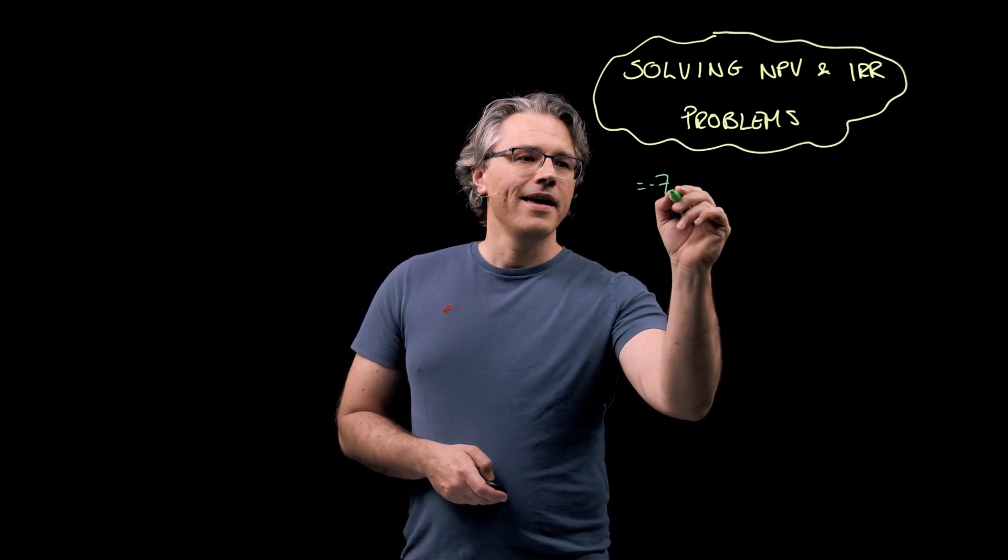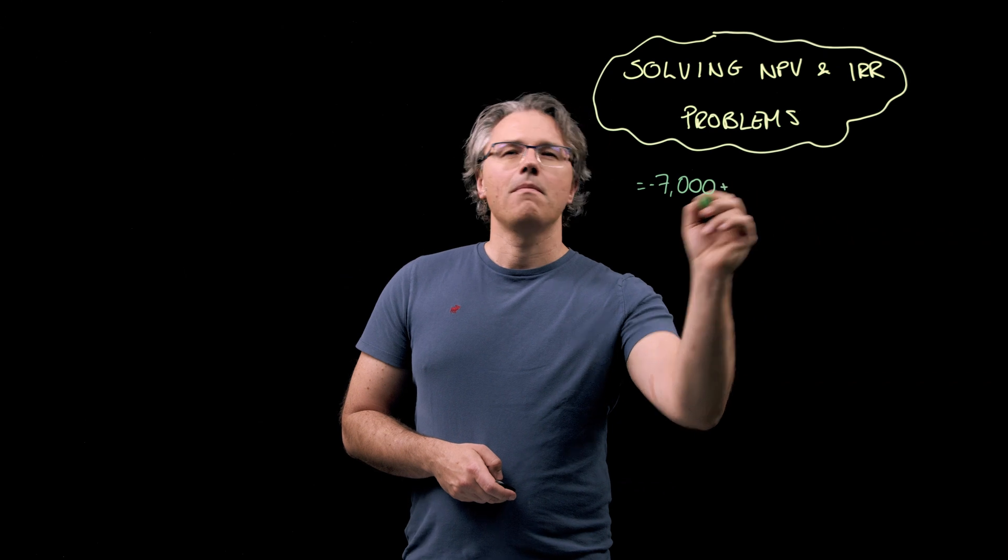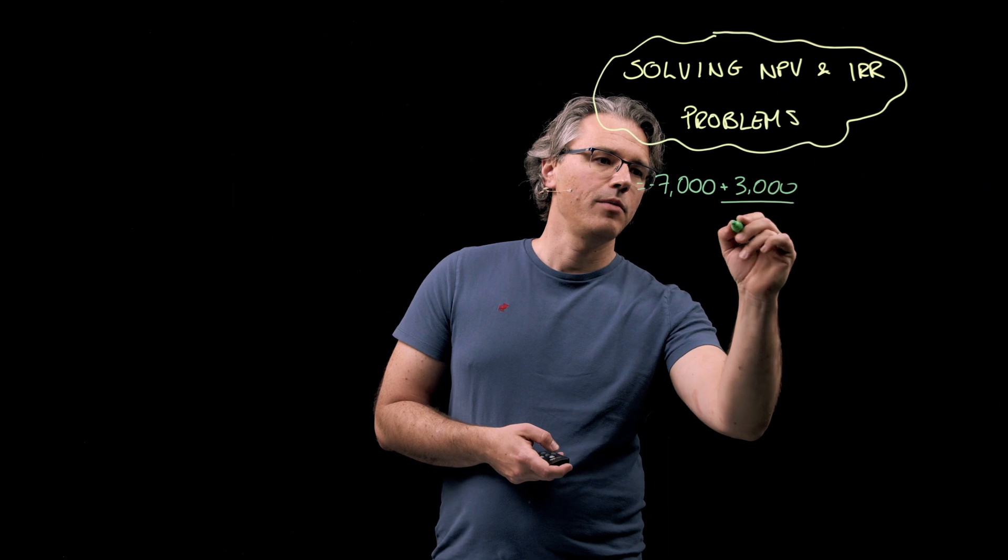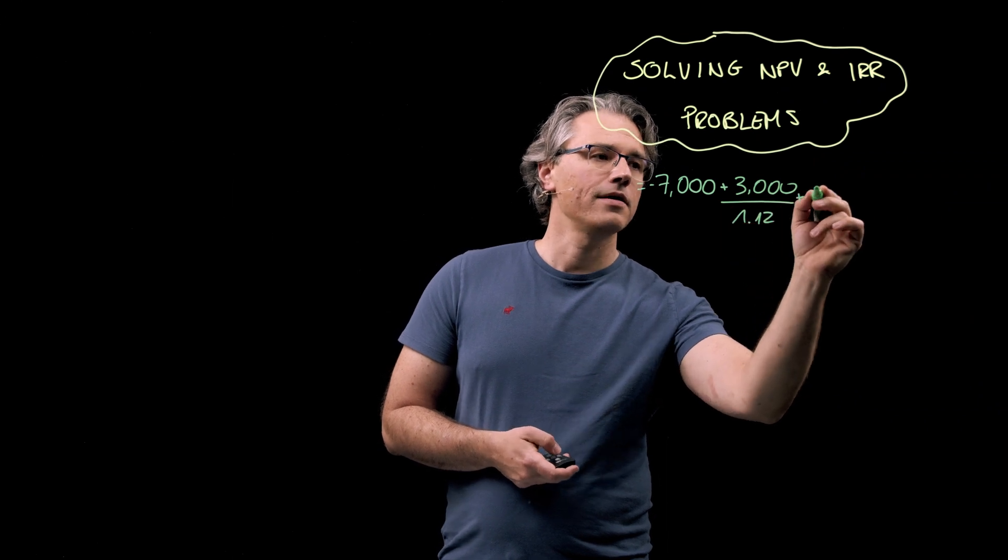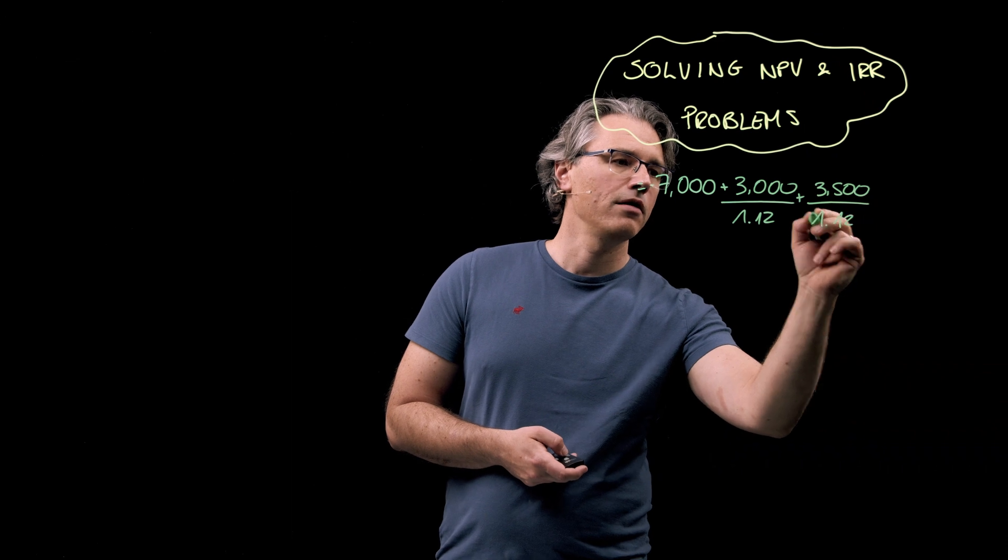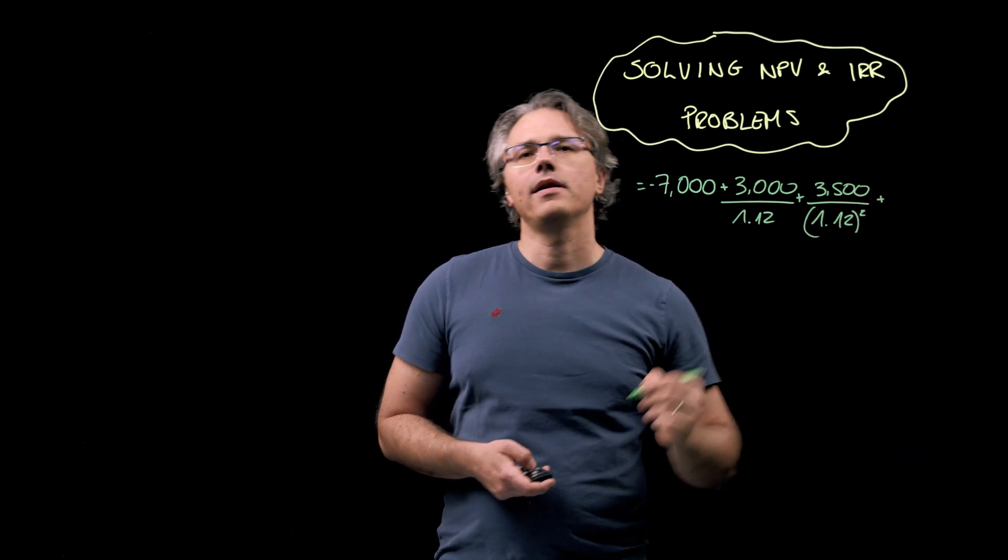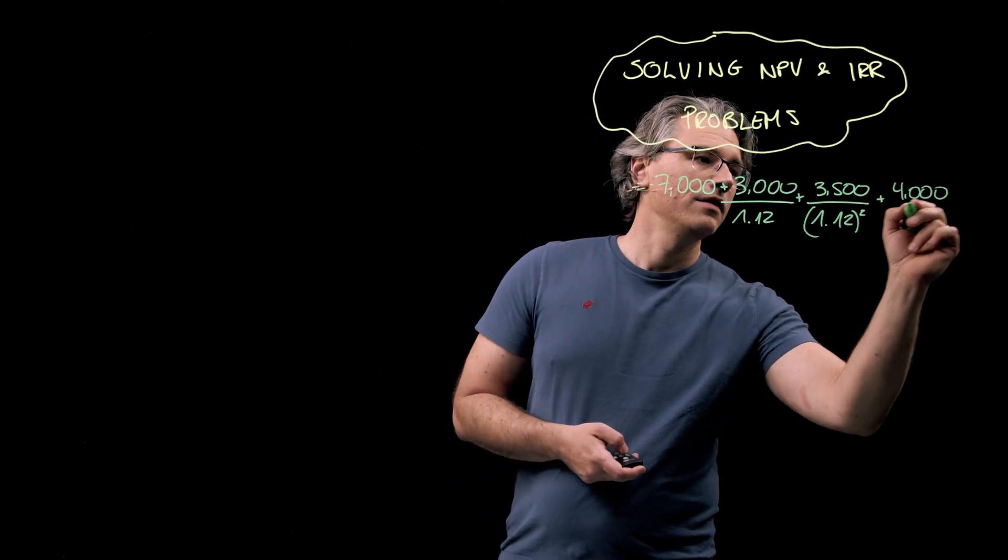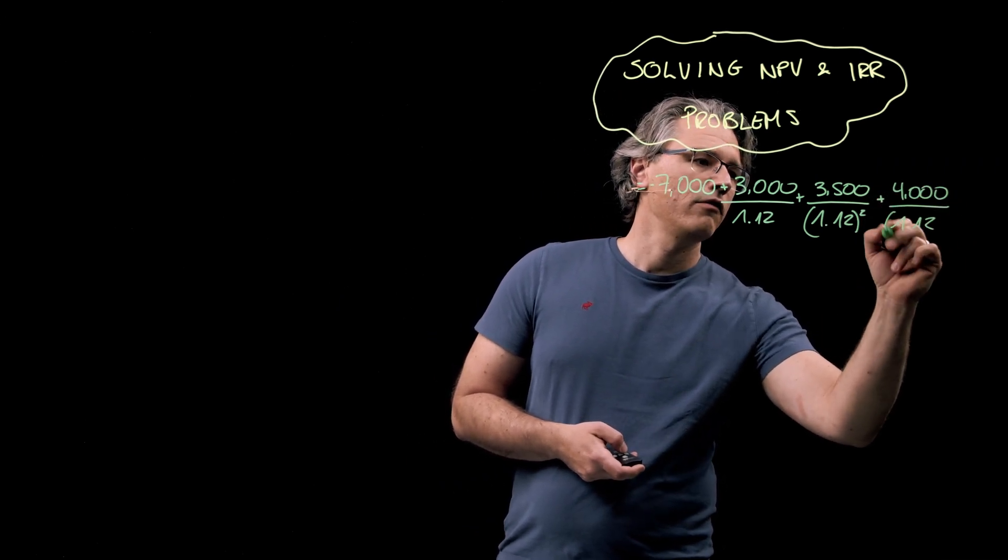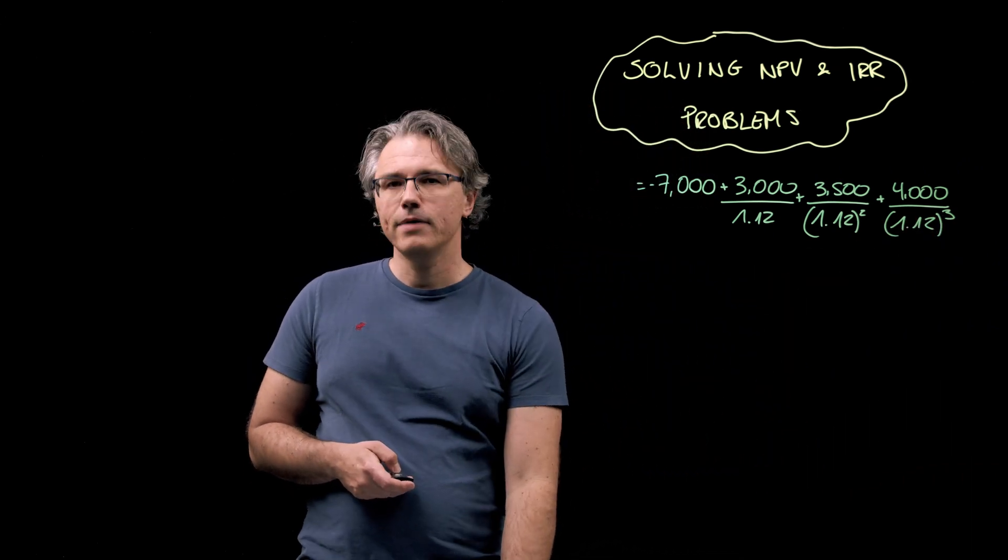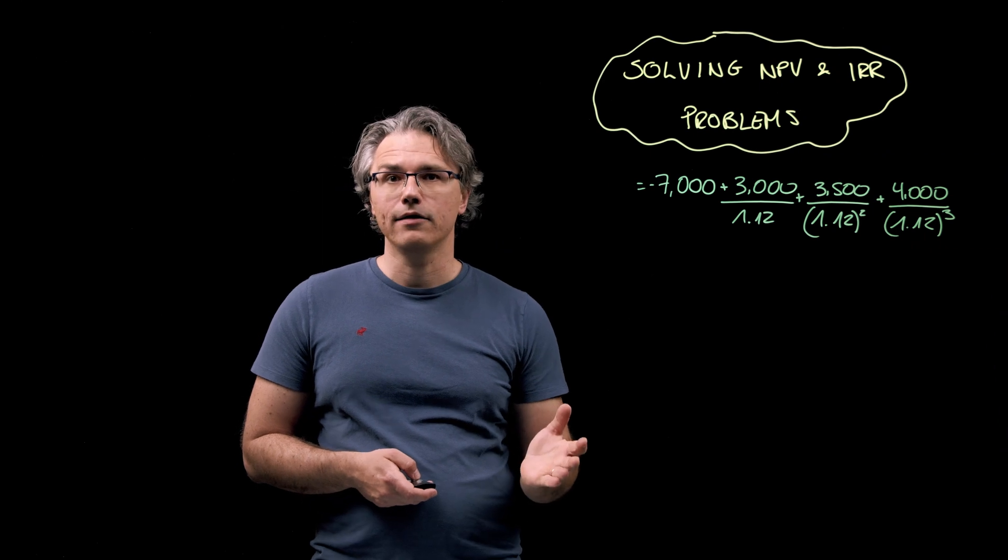Negative 7,000 plus 3,000 divided by 1.12 plus 3,500 divided by 1.12 squared plus finally 4,000 divided by 1.12 to the power of 3. Let's see if we can quickly do this on the calculator.